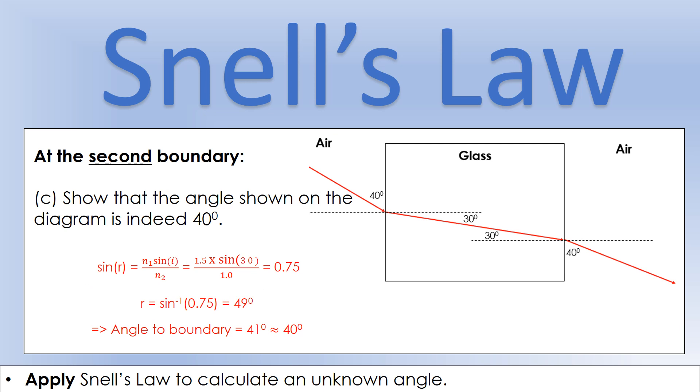We're going to plug our numbers in to calculate sine r. So n1 was 1.5 and n2 is 1.0, and sine i is sine of 30, and that comes out as 0.75. Then we're going to use the inverse sine function, which you access by doing shift sine on your calculator.